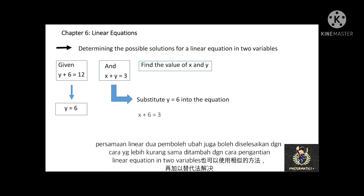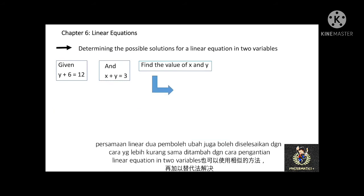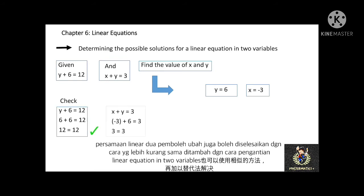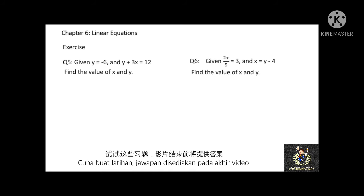Finally, we can check whether y equal to 6 and x equal to negative 3 is the solution for this linear equation in 2 variables. Substitute y equal to 6 into the equation y plus 6 equal to 12 and check whether the left-hand side value equals the right-hand side value. Then substitute y equal to 6 and x equal to negative 3 into the equation x plus y equal to 3 and check both sides. If equal, then the answers are correct. Let's pause the video again for 5 minutes and try this question — answers are provided at the end of this video.